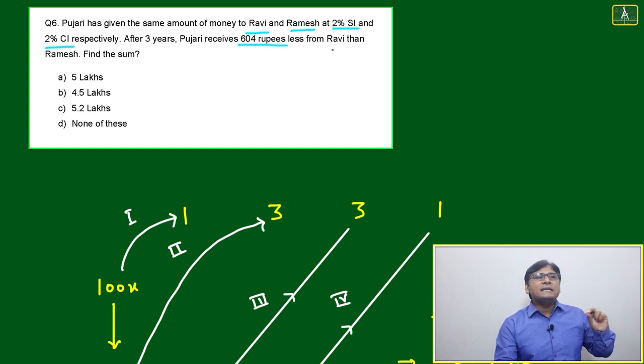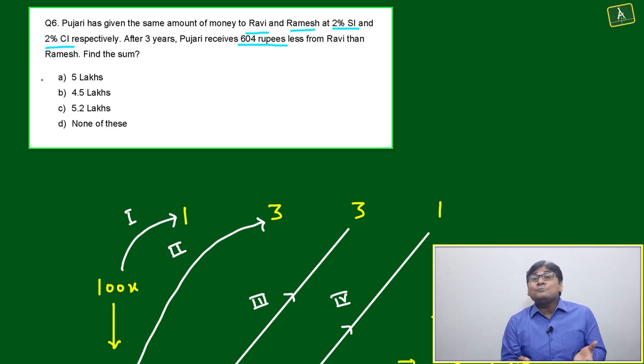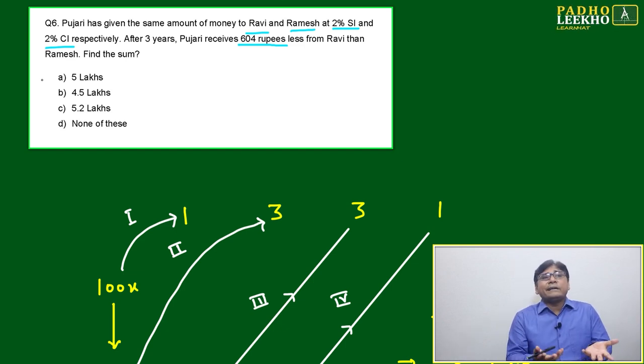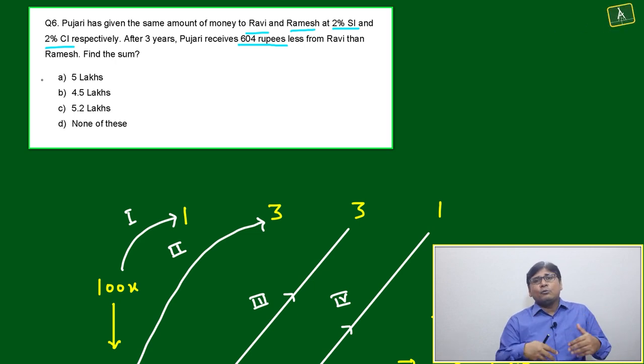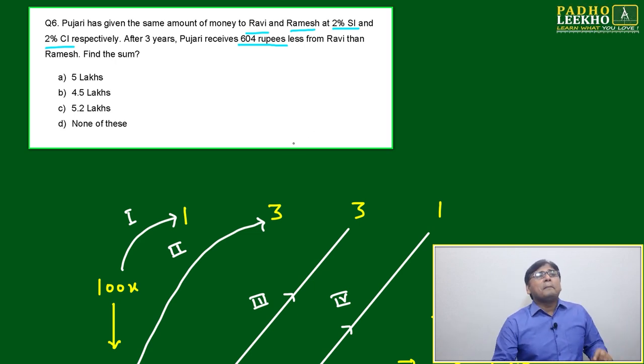After three years, Pujari receives 604 rupees less from Ravi than Ramesh, because Ramesh is paying compound interest, so he gives more interest. Pujari receives more interest from Ramesh compared to Ravi, who pays only simple interest.